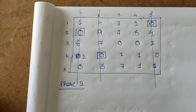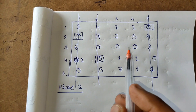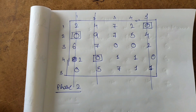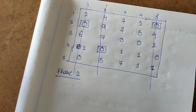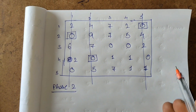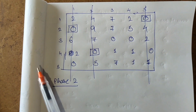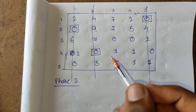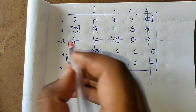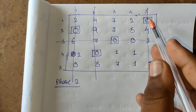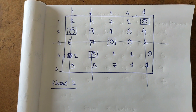If zeros remain undeleted after row scanning, we proceed to column scanning. In column scanning, we iterate column by column, checking for undeleted zeros and striking off horizontally. The first two columns have no undeleted zeros. In the third column there is one undeleted zero — highlight it in a square and strike off that whole row. The remaining columns have no undeleted zeros.